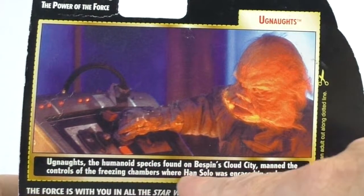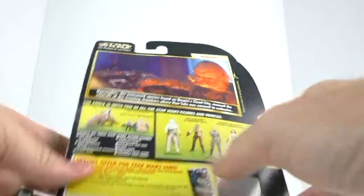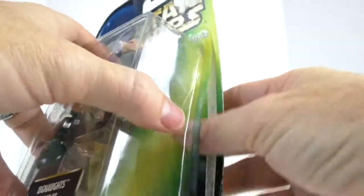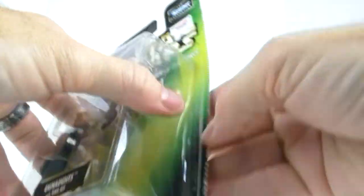It says Ugnaughts, the humanoid species found on Bespin's Cloud City, man the controls of the freezing chambers where Han Solo was encased in carbonite.